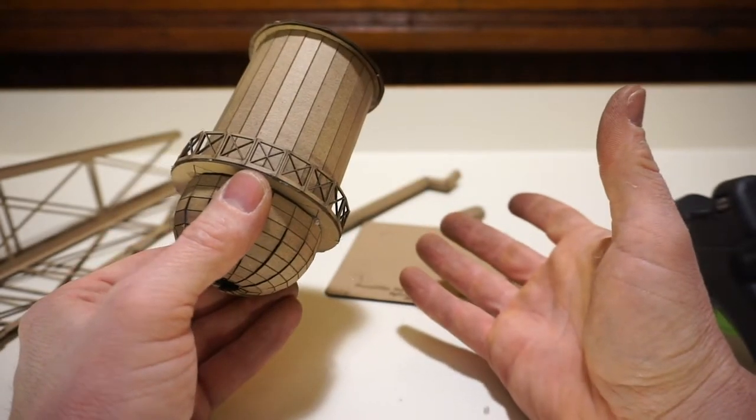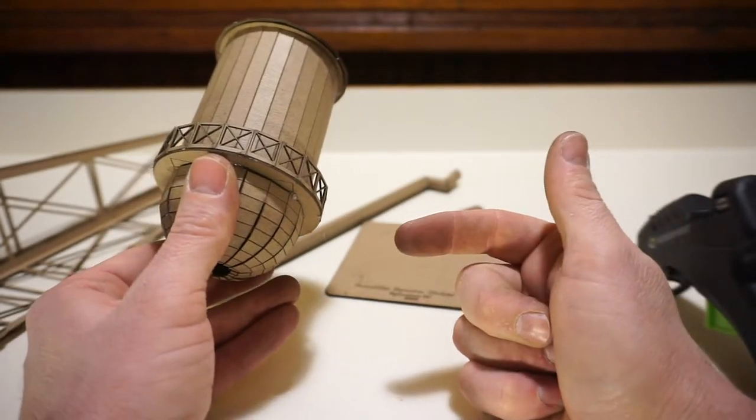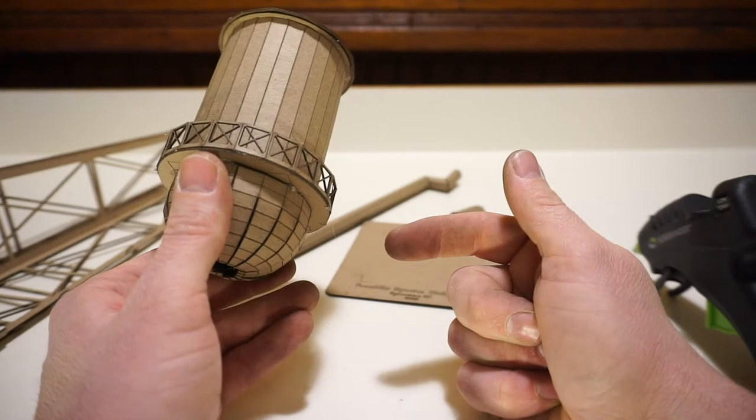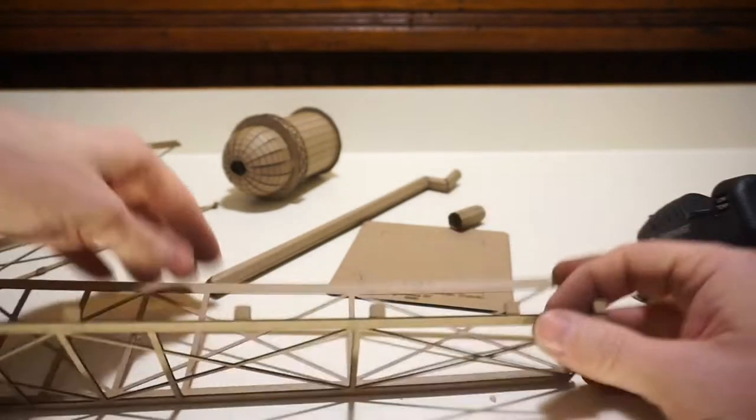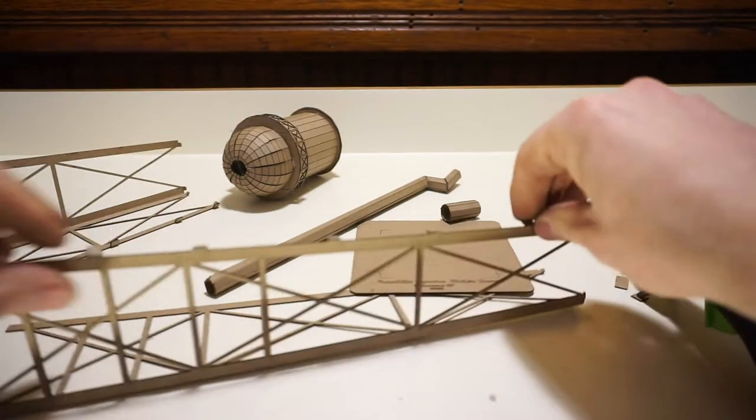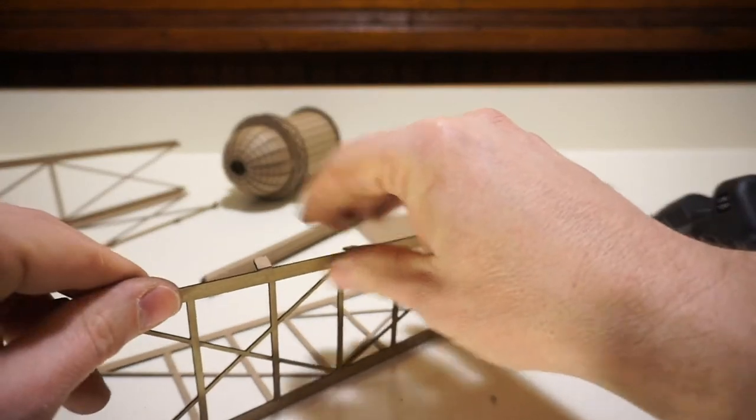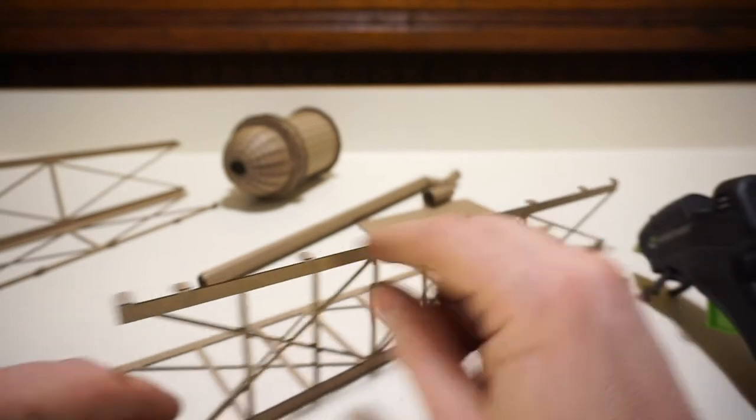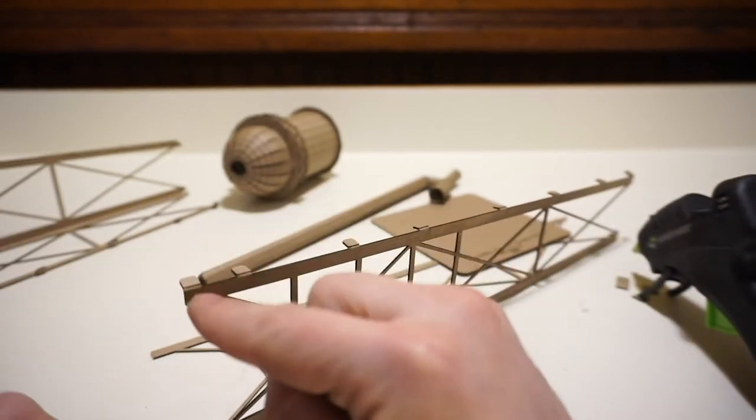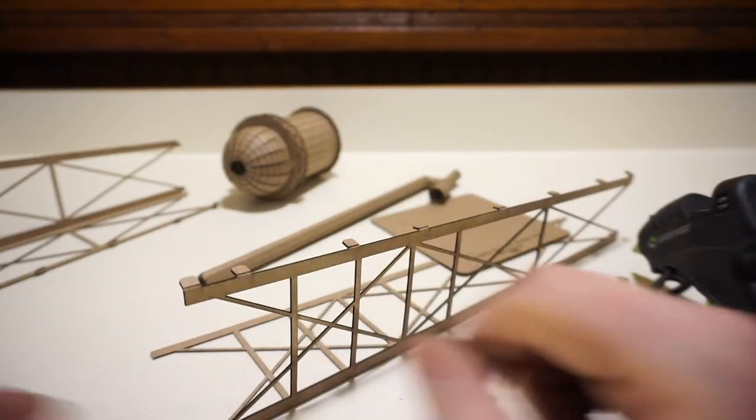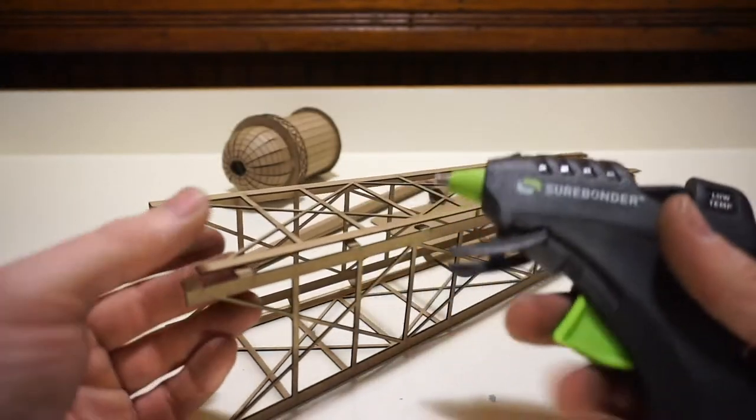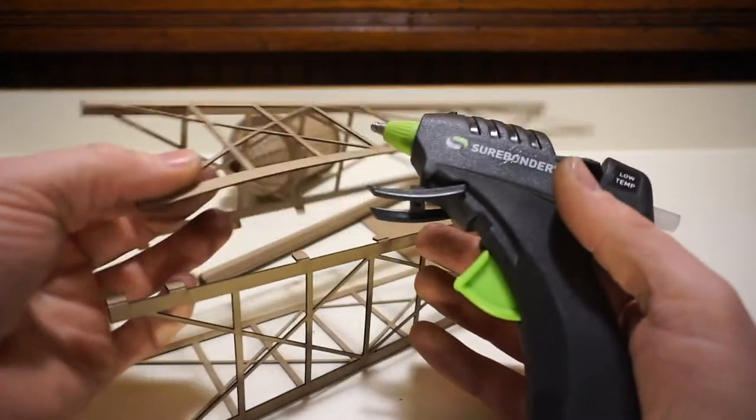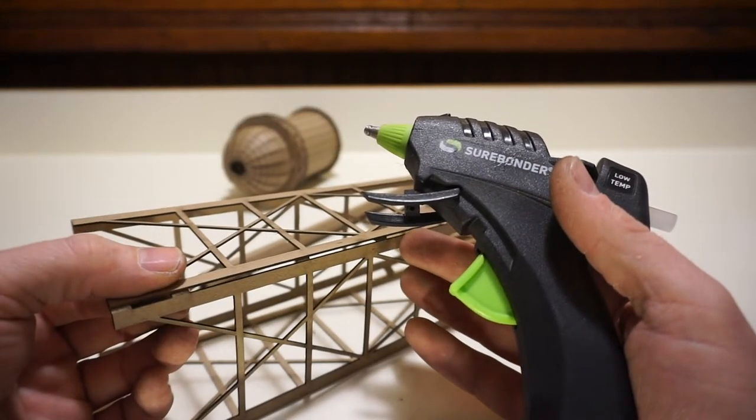Next step is going to be to put our structure together. So with our tower structure, what we're going to do is apply glue just to the bottom two pieces, two connections first. That'll help us with the alignment because what we want to do is line up these two structure pieces right to the bottom.